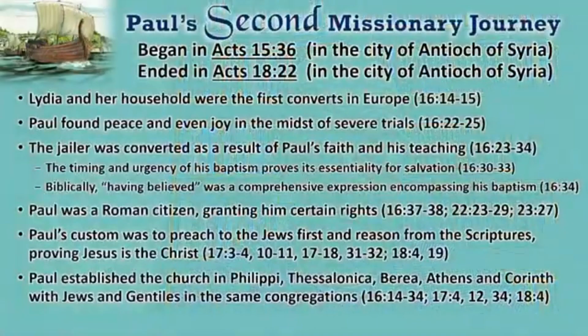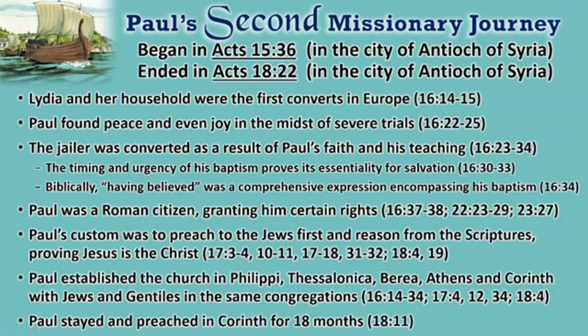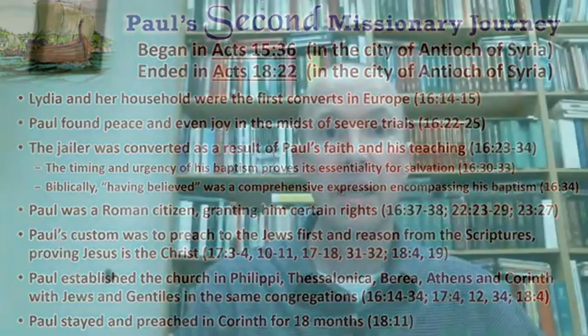In chapter 18 Paul stays in Corinth for 18 months — a year and a half — teaching the word of God, as verse 11 says. It's also here in chapter 18 verse 3 — the only place in the Bible — where we learn that Paul was a tentmaker, which he pursues while in Corinth, where he meets new friends who are also tentmakers, Aquila and Priscilla.